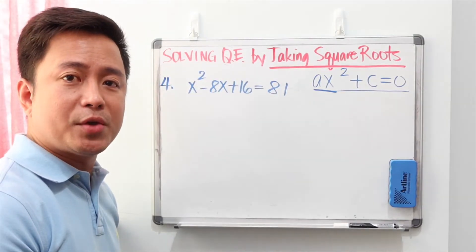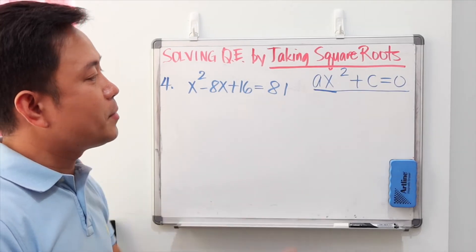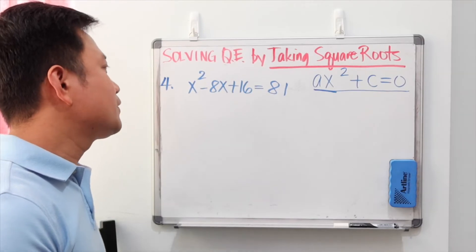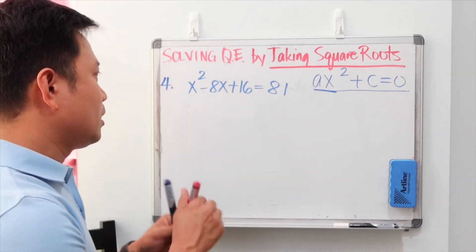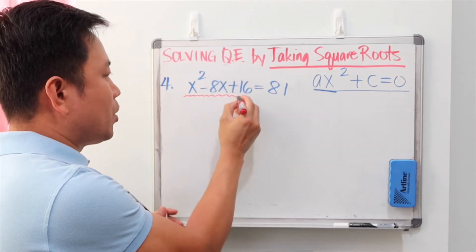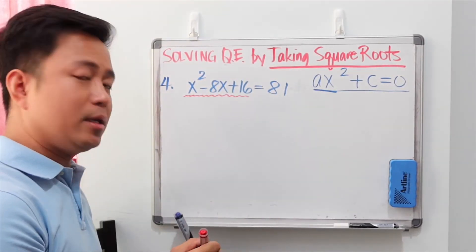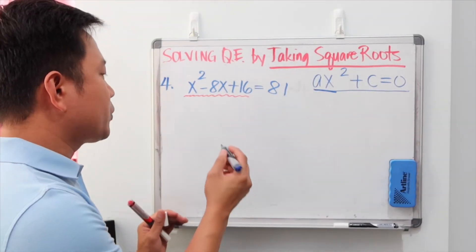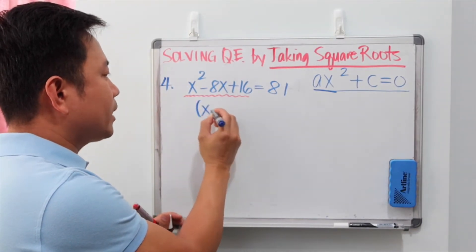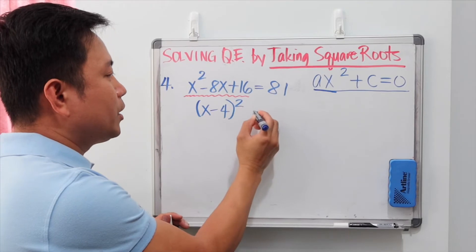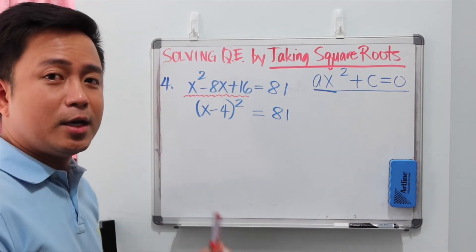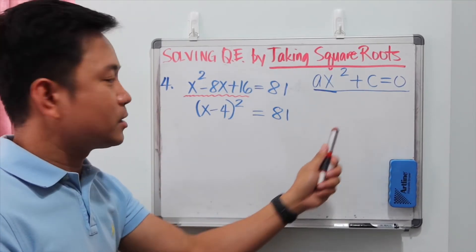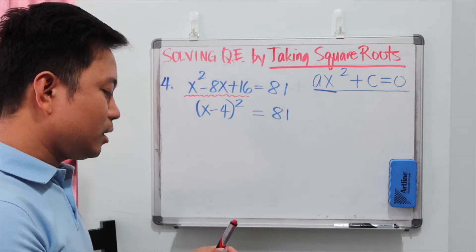Example 4 looks different and appears not to be in the ax squared plus c equals 0 format. However, notice the trinomial on the left side: x squared minus 8x plus 16 is a perfect square trinomial. We can factor it as x minus 4 to the second power, with 81 on the right side, rewriting the equation as x minus 4 squared equals 81.